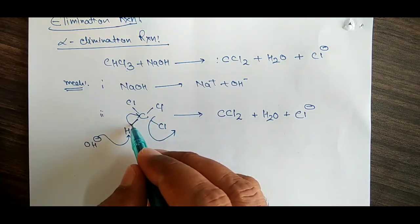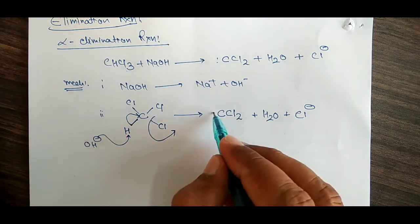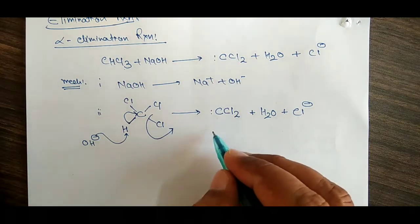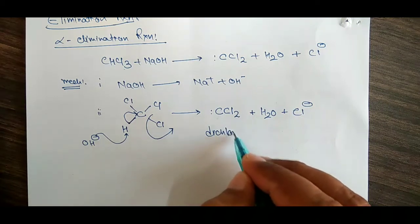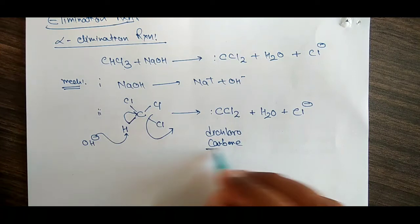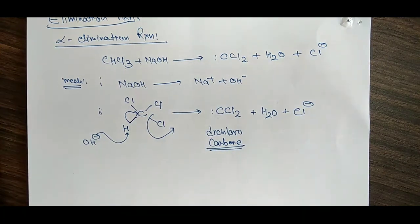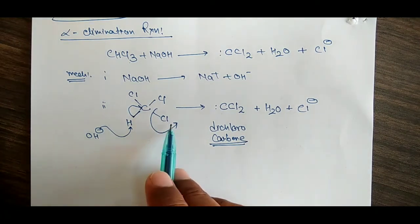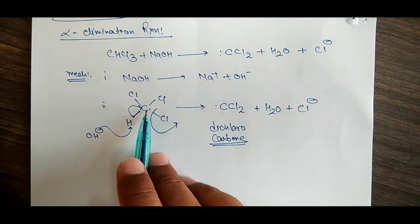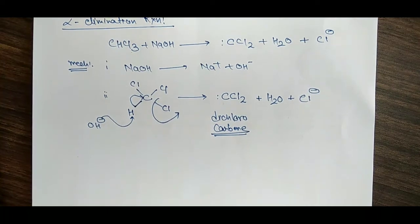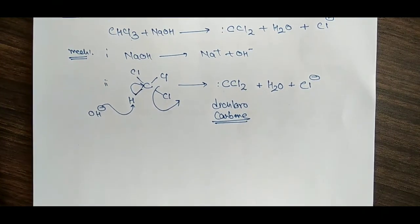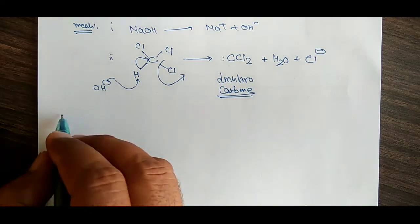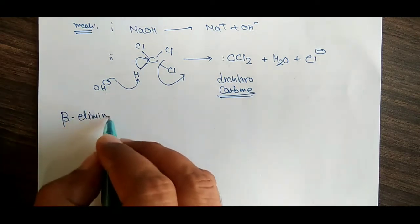The rest that remains is CCl2 — carbon with two chlorines attached, and both electrons of that bond go to this carbon. That is the carbene, the dichlorocarbene. This is the alpha elimination, in which the loss of water and loss of Cl take place from the same one carbon atom — the alpha carbon. That is why it is called the alpha elimination reaction.